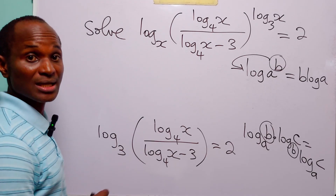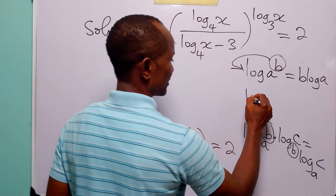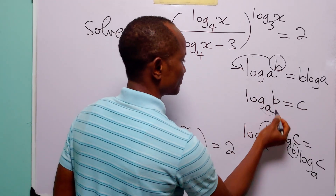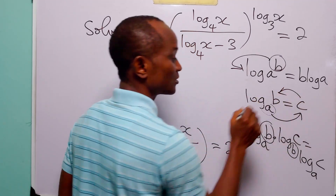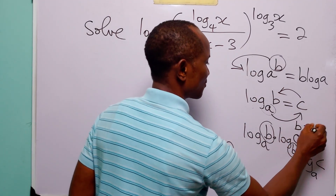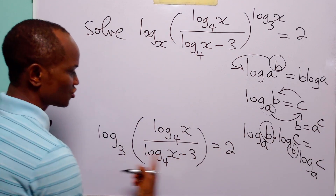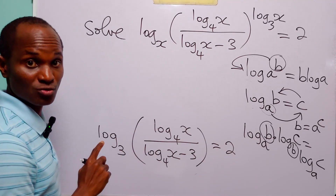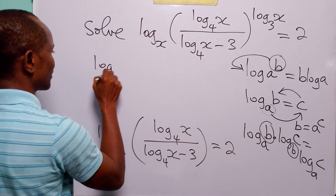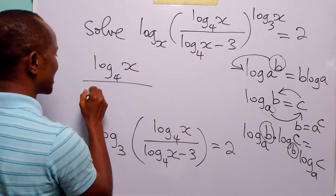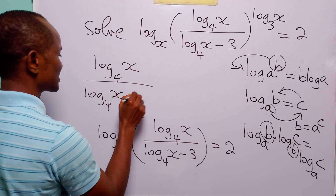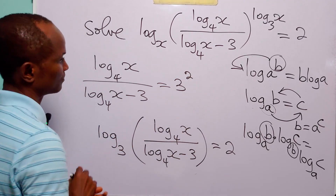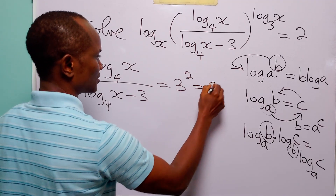At this point, let us remember that when we have a statement like log to base a of b is equal to c, this simply means that a raised to power c is equal to b. So in this case, we have that the expression equals 3 raised to power 2, which is 9.